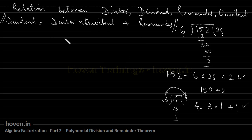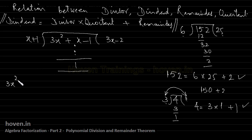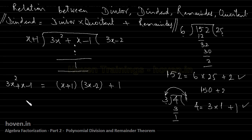The same relationship holds in the case of polynomials. In our first example, dividing 3x² + x − 1 by x + 1 gave quotient 3x − 2 and remainder 1. So we can write: 3x² + x − 1 = (x + 1)(3x − 2) + 1. If you simplify the right side, the two sides balance: x times 3x = 3x², x times −2 = −2x, 1 times 3x = 3x, 1 times −2 = −2, plus 1 gives −1. The relationship holds.